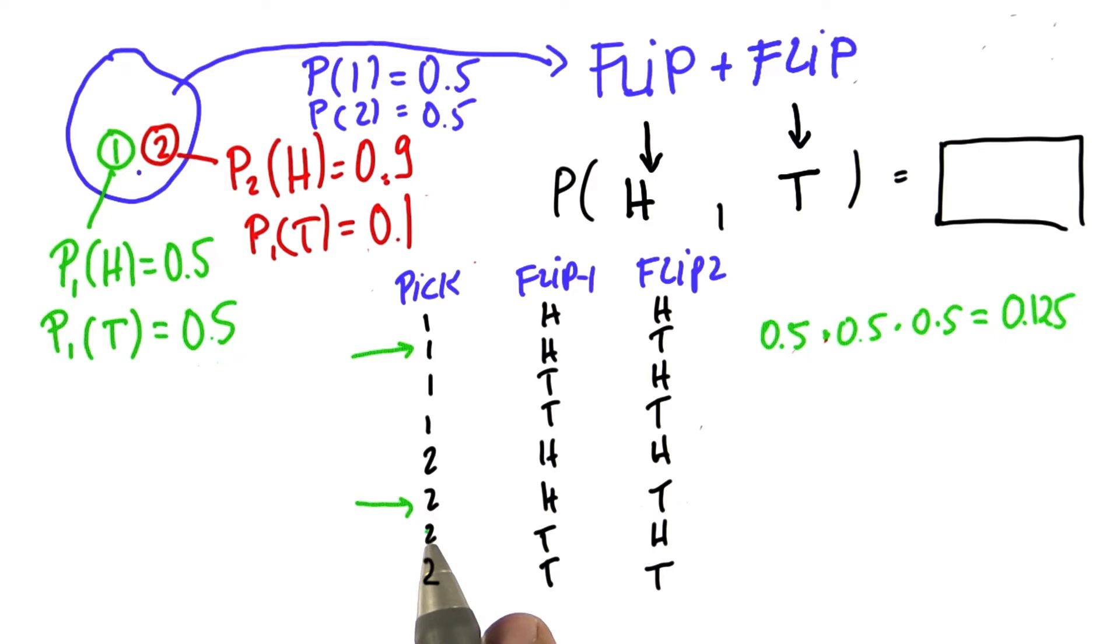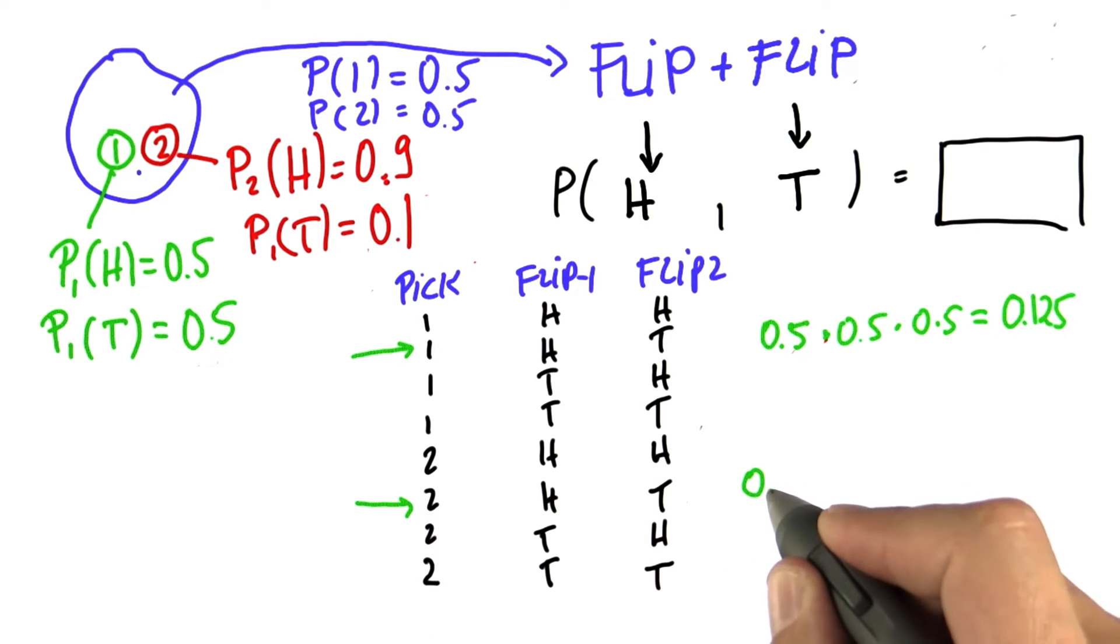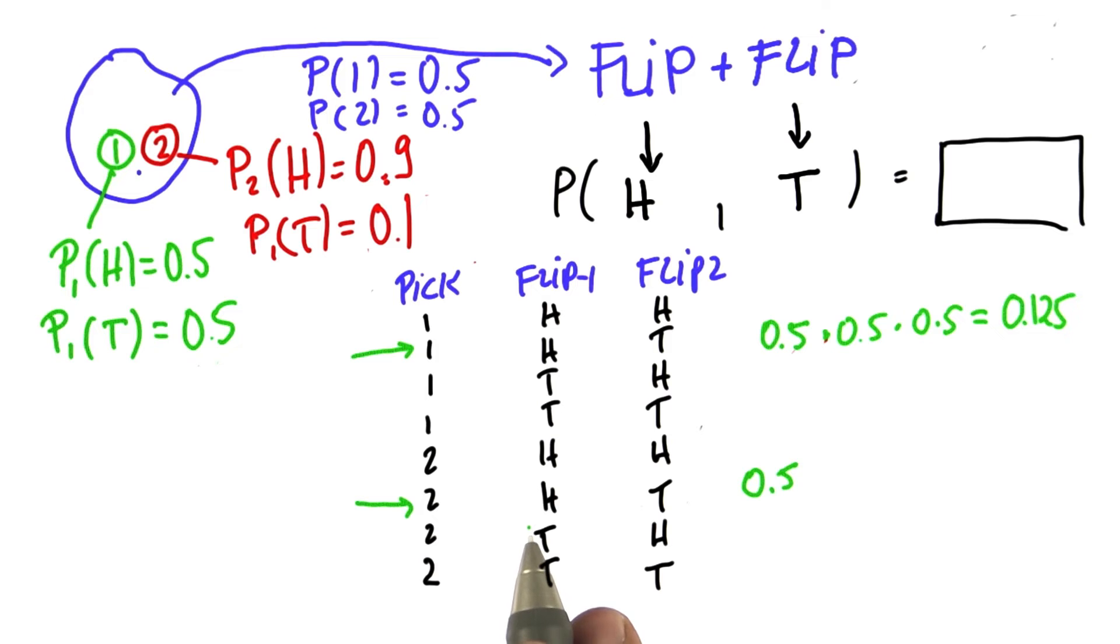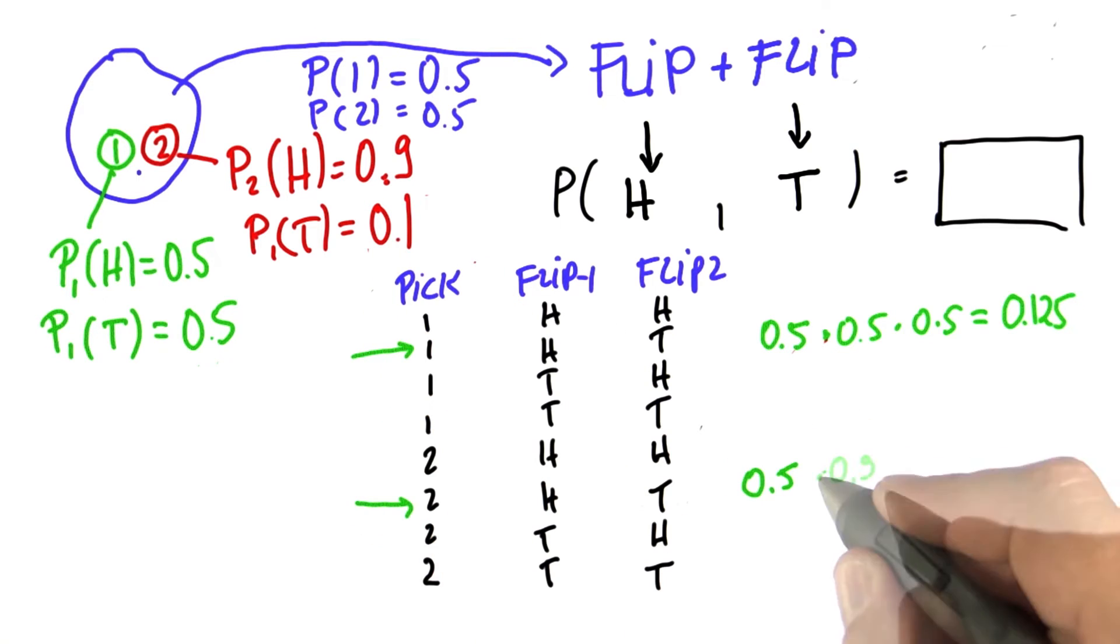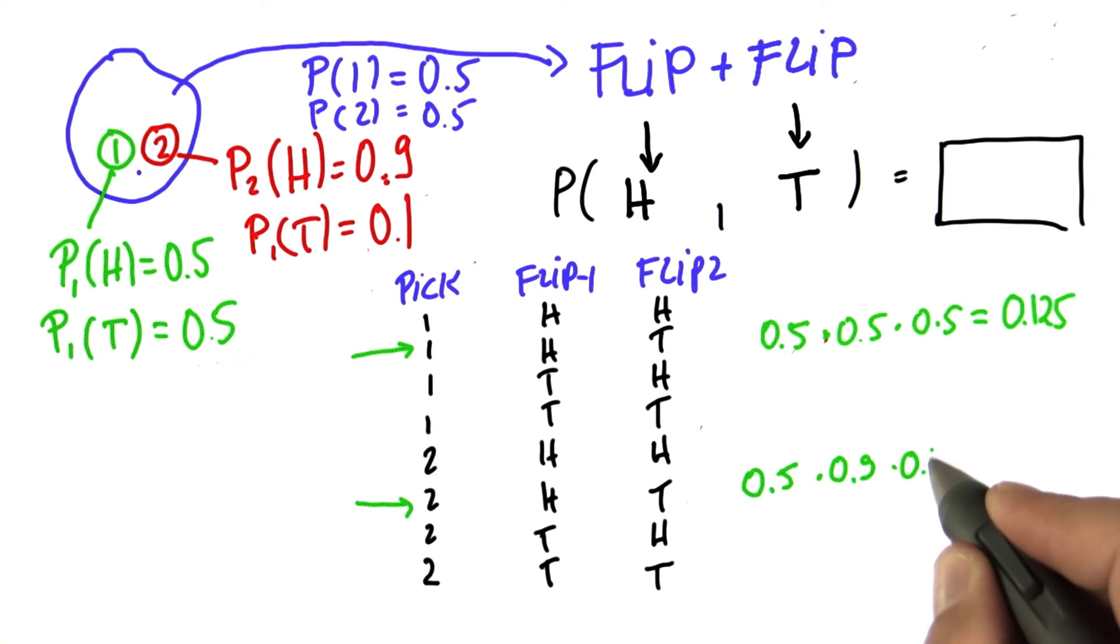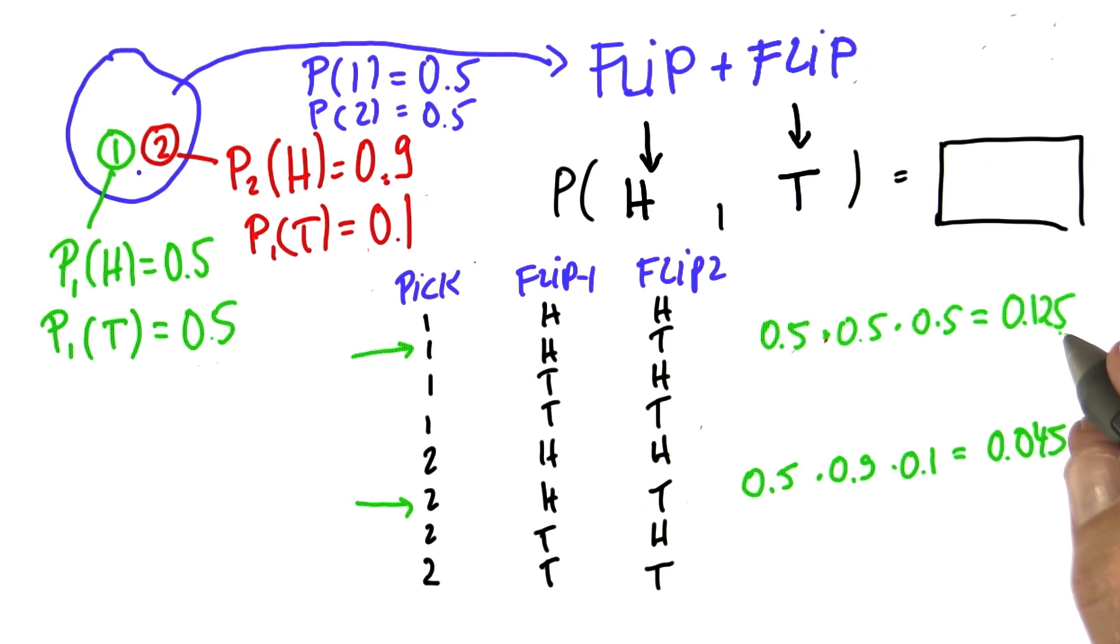And let's look at the second case. There's a 0.5 chance of picking coin number two. Now that one comes up with heads at 0.9 but it comes up with tails at 0.1. So multiplying these things together gives us 0.045, a smaller number than up here.